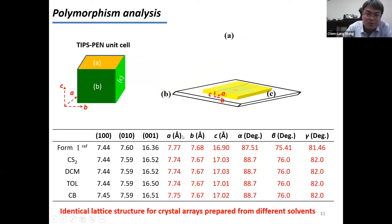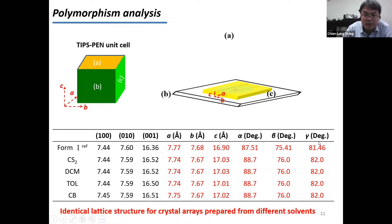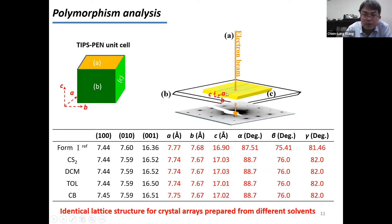To reveal the lattice structure of TIPS-pentacene in the crystal array, we needed to solve the unit cell. A unit cell has three lattice parameters — a, b, c — and three lattice angles — alpha, beta, and gamma. If we can reveal these, we can determine whether polymorphism is present. First, we use electron diffraction to reveal the ab plane of the lattice, resolving a, b, and the gamma angle.